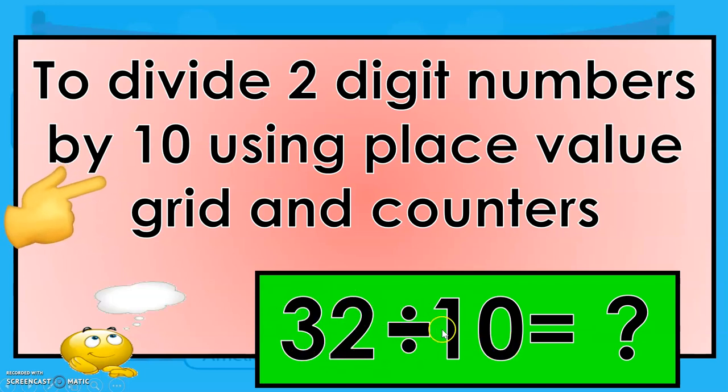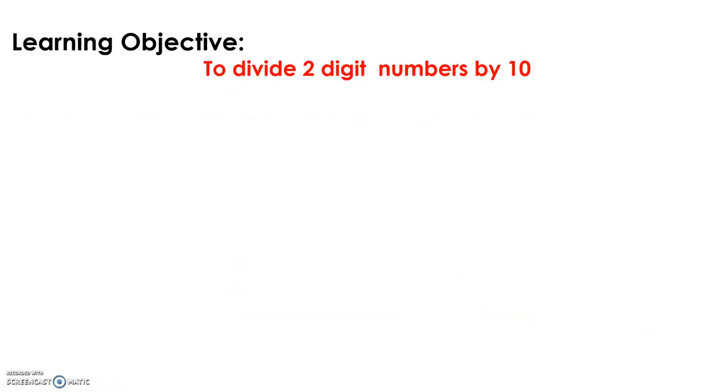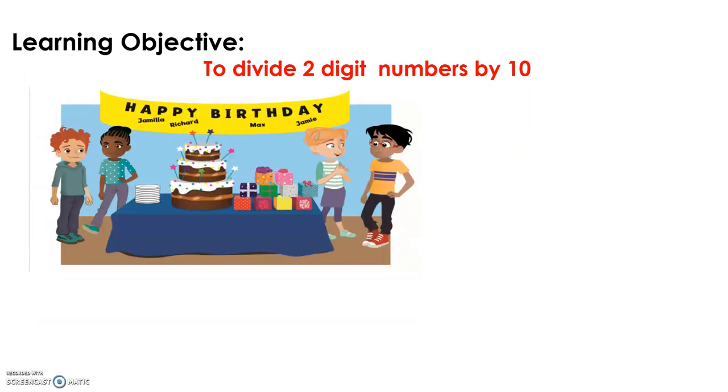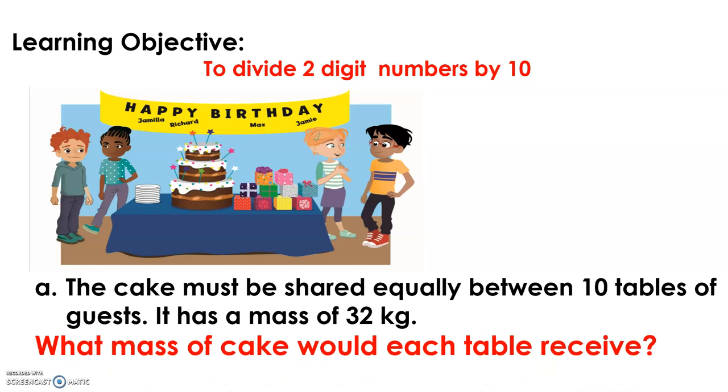We don't have the answer yet, so let's have a start. The learning objective for this morning is to divide two-digit numbers by 10. Let's take a look at the picture and observe. The problem goes like this: the cake must be shared equally between 10 tables of guests.